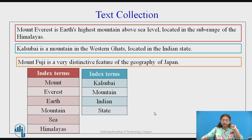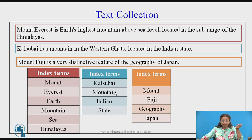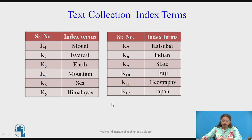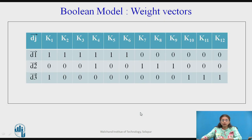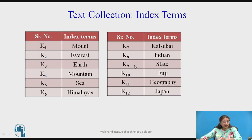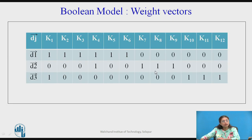These are some of the identified keywords for the three documents. Some keywords repeat and some are unique, giving us a total collection of 12 keywords from these three documents, from k1 to k12. Once we have identified these index terms, the next part is to define the weight vectors in the Boolean model. We have three documents, so we have three weight vectors, each entry being 1 or 0. Keywords k1 to k6 are present in the first document so their weight is 1, whereas k7 to k12 are not present so they are 0. Similarly, k7 to k9 (including 'mountain') are present in the second document so they are 1, and for d3 'mount' and three remaining keywords are present with weight 1 and the rest are 0.